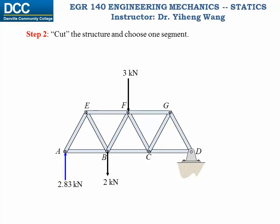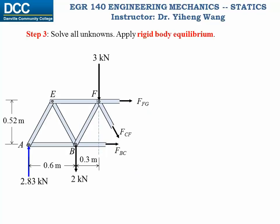Step 2: cut the structure. We have already decided to choose the left segment for our analysis. Step 3: apply rigid body equilibrium to solve for our unknowns. We start with a free body diagram of the left segment. Since we have already solved for the support reaction at point A, we have only three unknowns: FBC, FCF, and FFG.